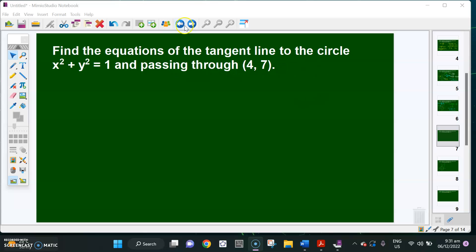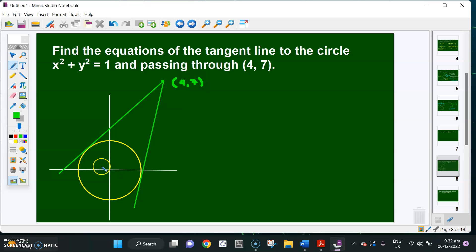So if we're going to sketch the graph of the circle and the point, we have this one. This is the external point (4, 7). Suppose this is the unit circle, and as you can see it's centered at the origin and we are looking for the equations of these two tangent lines.